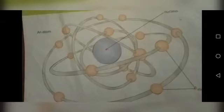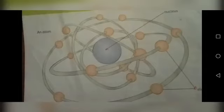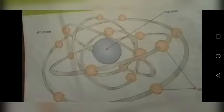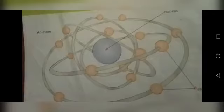جس طرح آپ planet system دیکھتے ہیں تو سورج کے اردگرد سارے planets move کر رہے ہوتے ہیں - earth, mars, jupiter, mercury وغیرہ. اسی طرح atom کے اندر nucleus کے اردگرد electron move کرتا ہے. اور electron کی movement سے جو energy پیدا ہوتی ہے اسے ہم بولتے ہیں electricity.